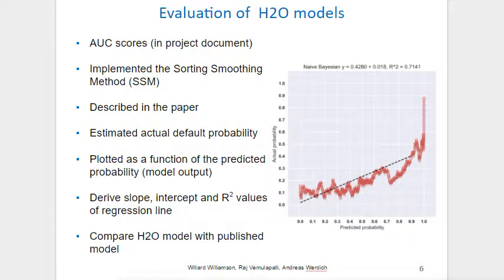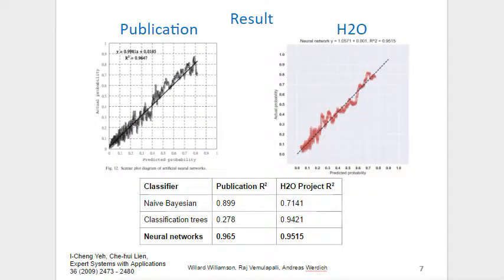We can use those numbers to compare our H2O model with the published data. Here on the left side you can see a published neural network on the same dataset, and on the right side our H2O neural network model. From the graphs and the table below, which show the R-squared value, you can infer that our model is at least as good or even better than the published model.